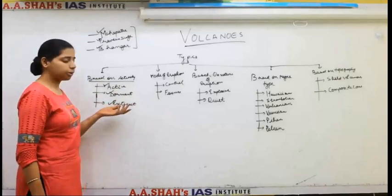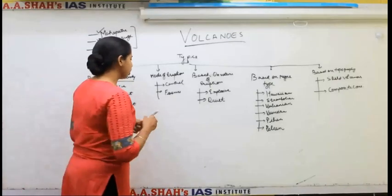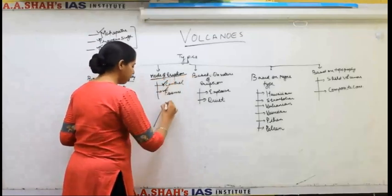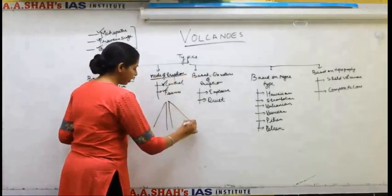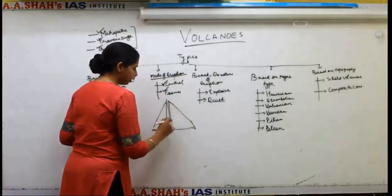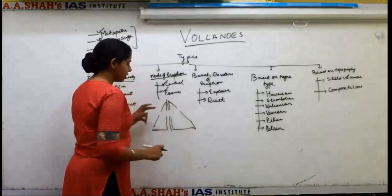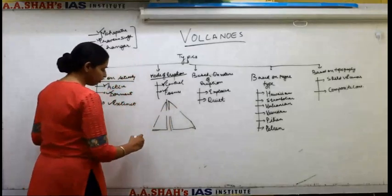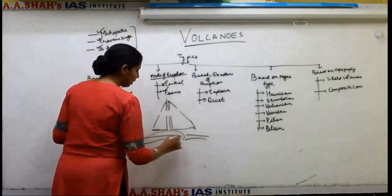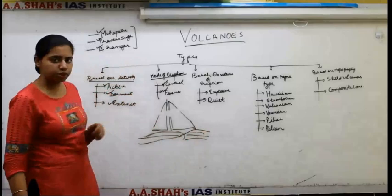There are no chances of eruptions in an extinct volcano. Then, based on the mode of eruption, it can be a Central Volcano or a Fissure Volcano. A Central Volcano is one where the conduit, the fissure, is in the centre. If it is not a central volcano, then there can be fissures — cracks on the surface of the earth — which might result in the flow of lava all around. This is known as a fissure eruption.